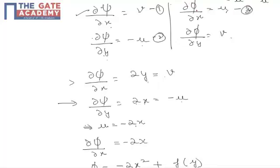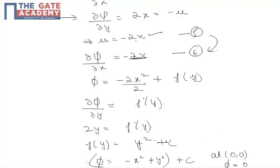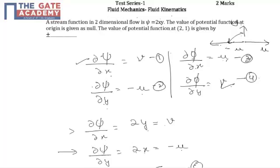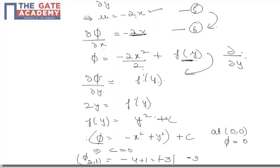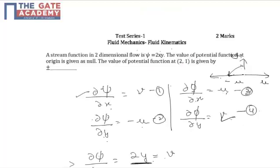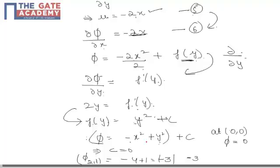From relation 3, del phi upon del x equals u, so we write del phi upon del x equal to minus 2x. Substituting and integrating with respect to x, we get phi as minus x squared plus a function in y. Differentiating with respect to y gives del phi upon del y equals f'(y), and since del phi upon del y equals v equals 2y, we get f'(y) = 2y. Integrating, f(y) equals y squared plus c. So phi equals minus x squared plus y squared plus c. Since phi equals 0 at the origin, c equals 0.